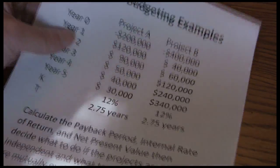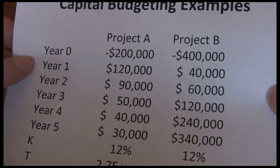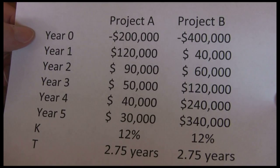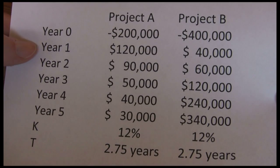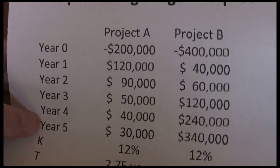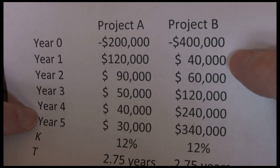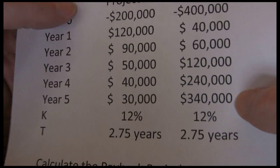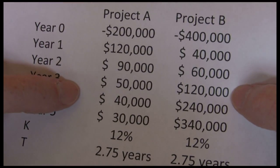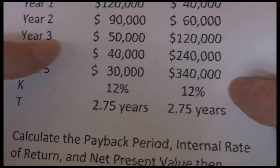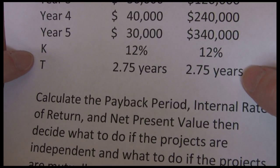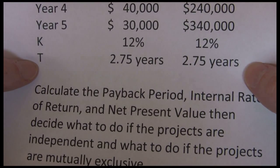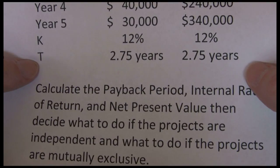Let's start with our example. We've got two projects, Project A and Project B. Both projects have five years worth of cash flows. Project A, we're spending $200,000, earning back $120,000, $90,000, $50,000, $40,000, and $30,000. Project B, we're going to spend a little more, $400,000, earn back $40,000, $60,000, $120,000, $240,000, and $140,000. So Project A is front-loaded, most of our cash flows come in early. Project B is back-loaded, most of our cash flows come in late. Both projects have a required return of 12%, and a critical acceptance level for our payback period of 2.75 years. So 2.75 years is when we want those paid back.